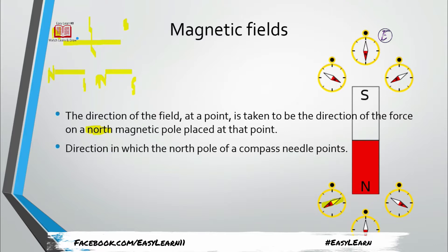The compass needle represents the direction of the magnetic line of force. If I place the compass needle at a point, the direction it points gives the field direction there. To represent this conventionally, the arrowhead represents the north pole and the tail represents the south pole — the red end is the arrowhead and the white end is the tail.